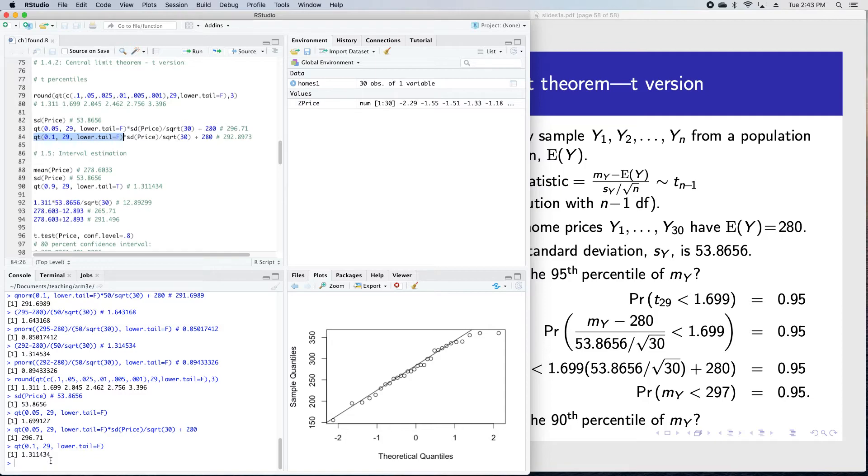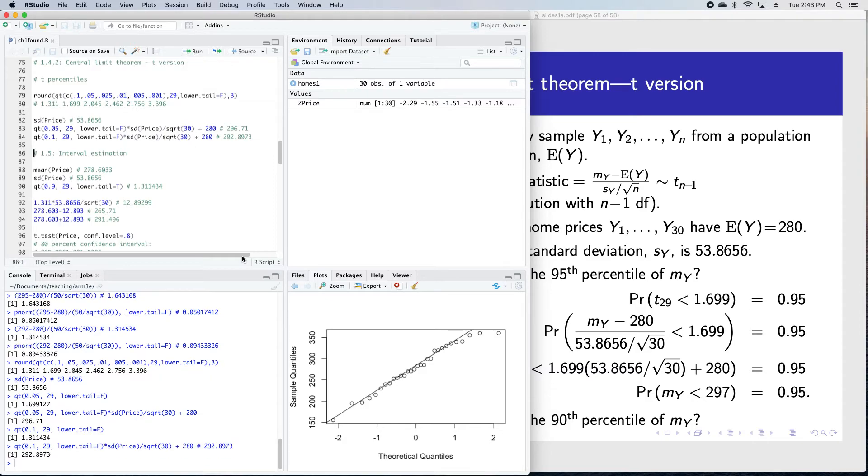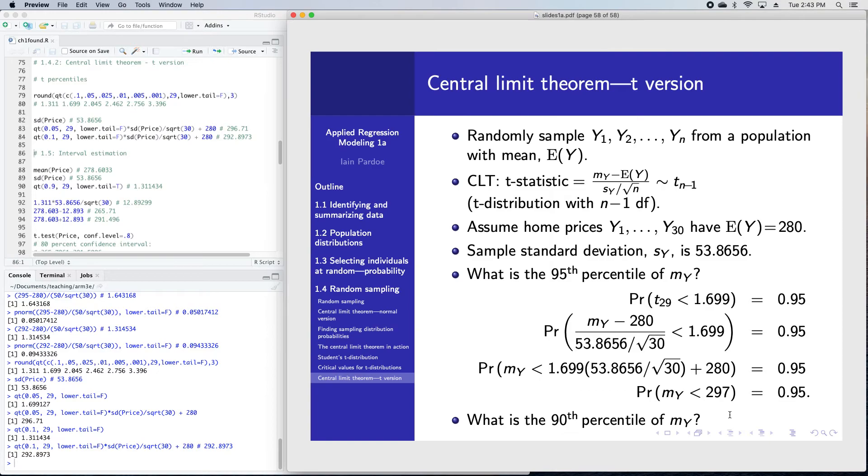If I multiply that by the standard deviation divided by the square root of 30 plus 280, I get 292.8973 or $293,000 to the nearest thousand dollars. So the 90th percentile of the sample mean is $293,000.